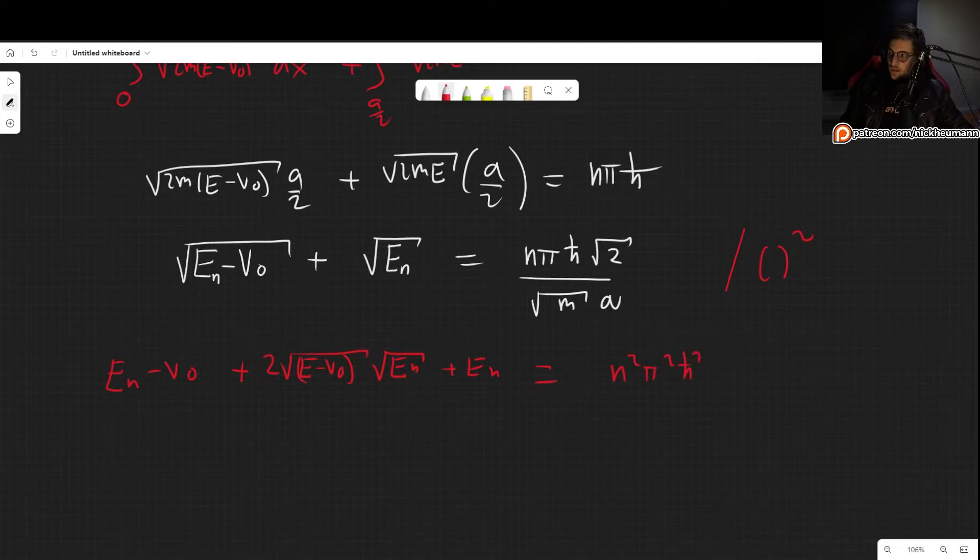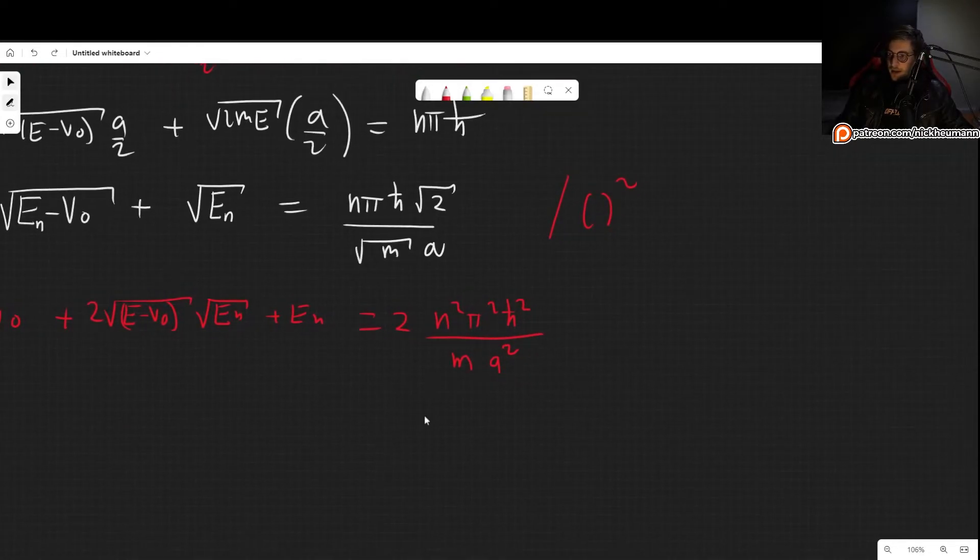And this is equal to this thing squared, which is N squared pi squared H bar squared divided by 2, and then we have MA squared. Now this might look familiar, and if it is, it's because this is exactly the energy levels of the unperturbed infinite square well. So basically E0N is N squared pi squared H bar squared divided by 2MA squared.